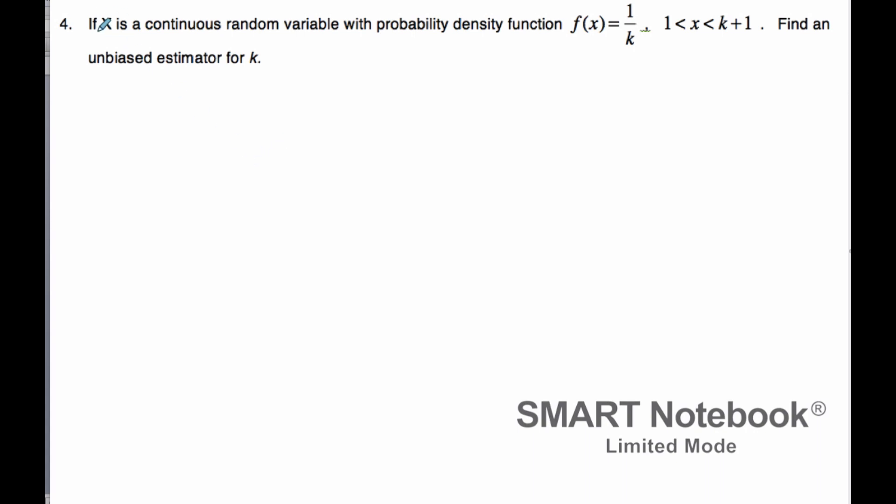In this example, we've got a continuous random variable X with a probability density function f(x) equals 1 over k, where it's defined from 1 to k plus 1. We want to find an unbiased estimator for k.